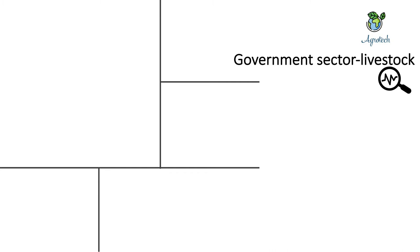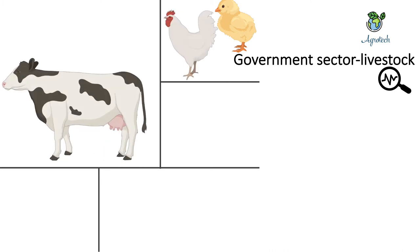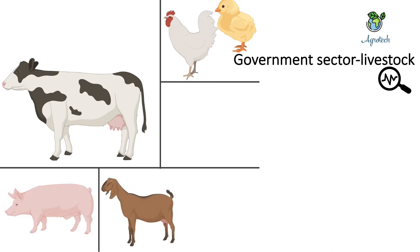When we talk about livestock, different species are involved, including chickens, cattle, swine, and goats. However, I found more information related to cattle and did not find enough information for poultry, swine, and goats.